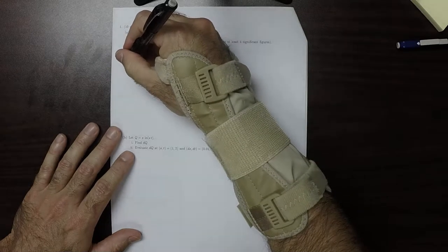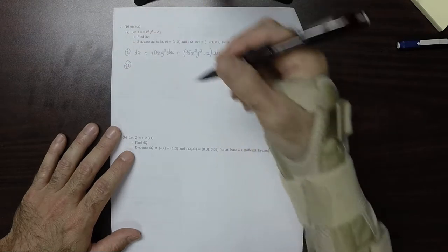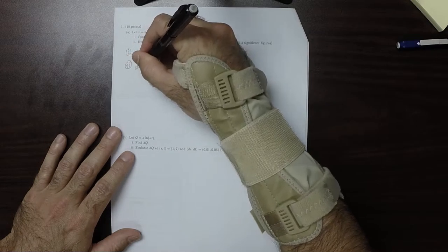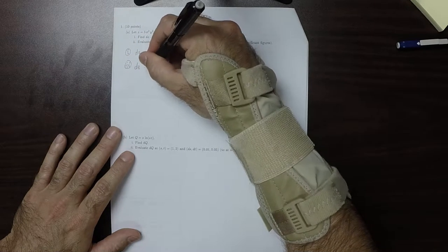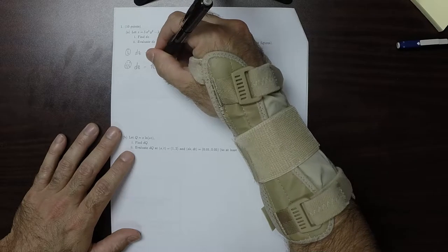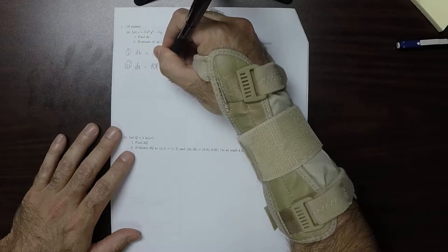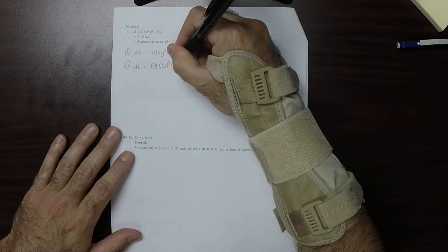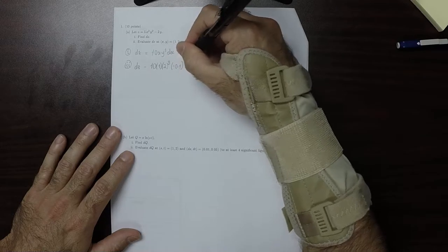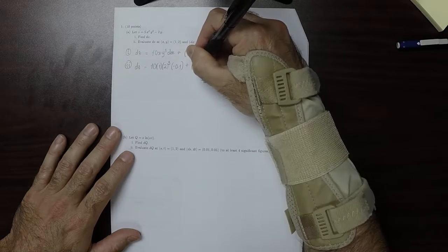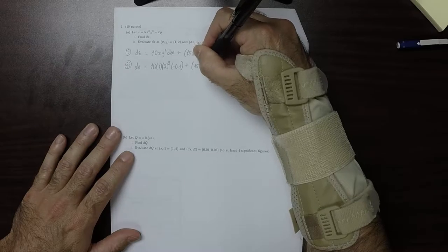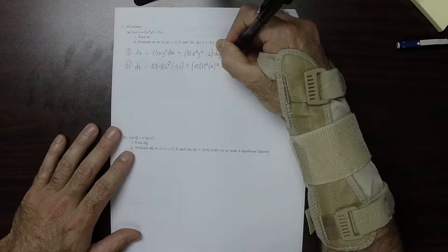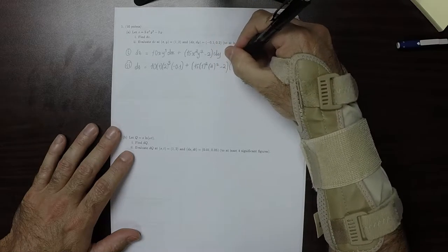OK, so then part ii. What's requested is that we plug in all those values. So then dz would be 10 multiplied by 1 times 2³ times negative 0.1, plus 15 times 1² times 2² minus 2, times 0.2.